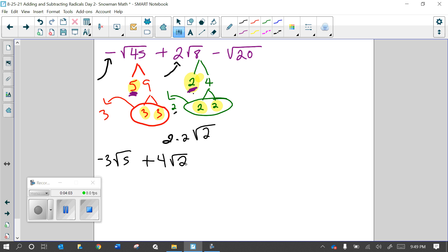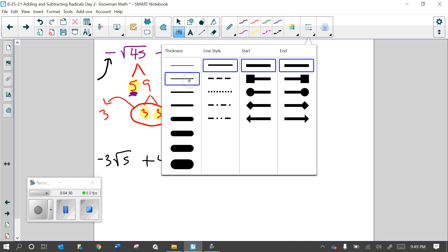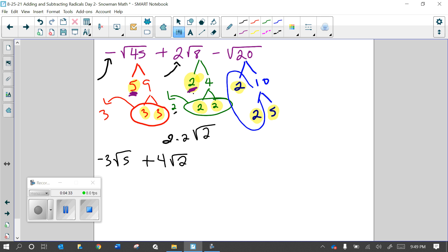The last one, minus square root of 20. That's going to break down. I like to use 2 and 10, since we used 2 on the last example. And then 10 can break down as 2 times 5. So then now our prime numbers we're working with are 2, 2, and 5. Looks like we have a pair of 2's.